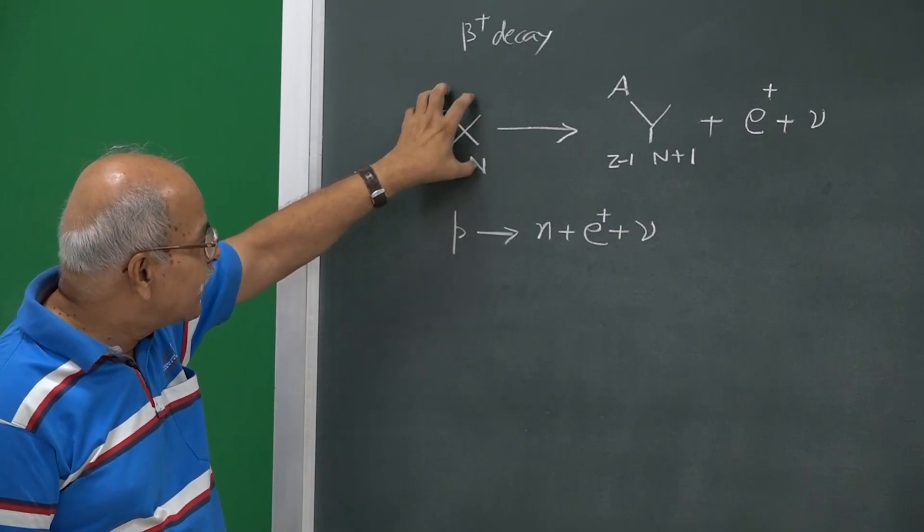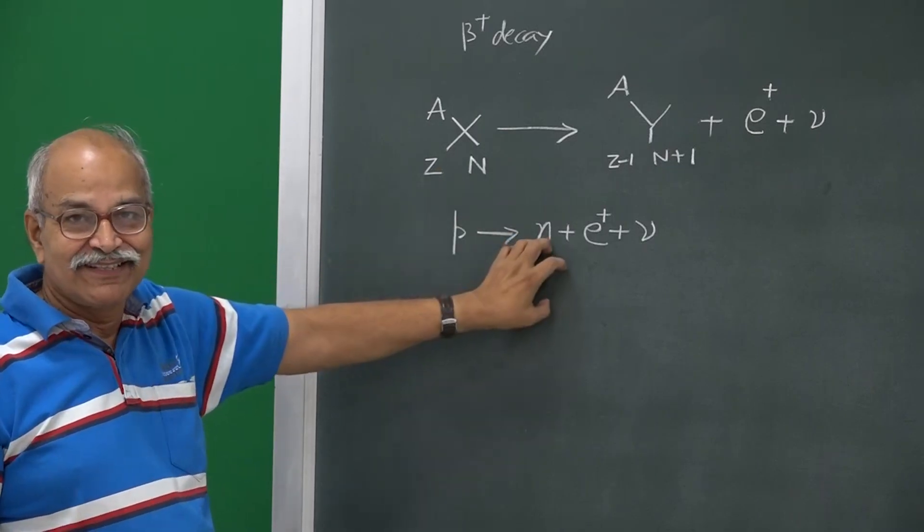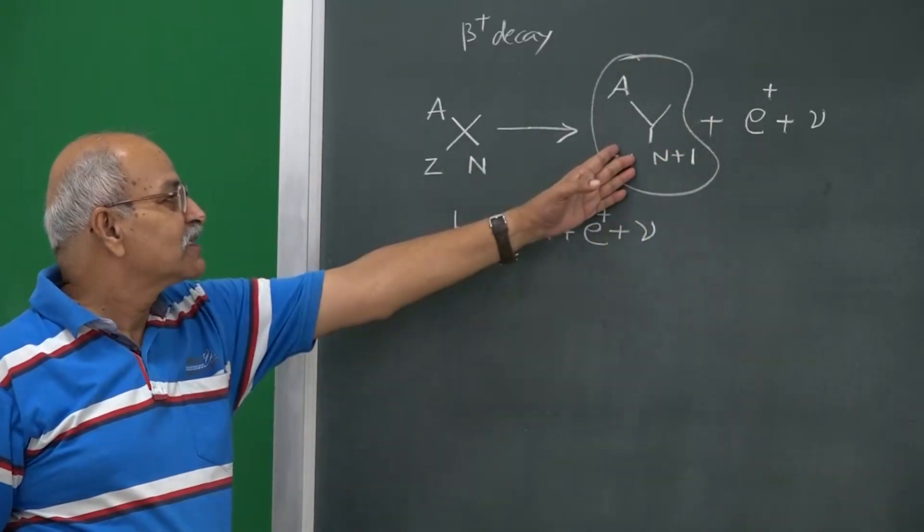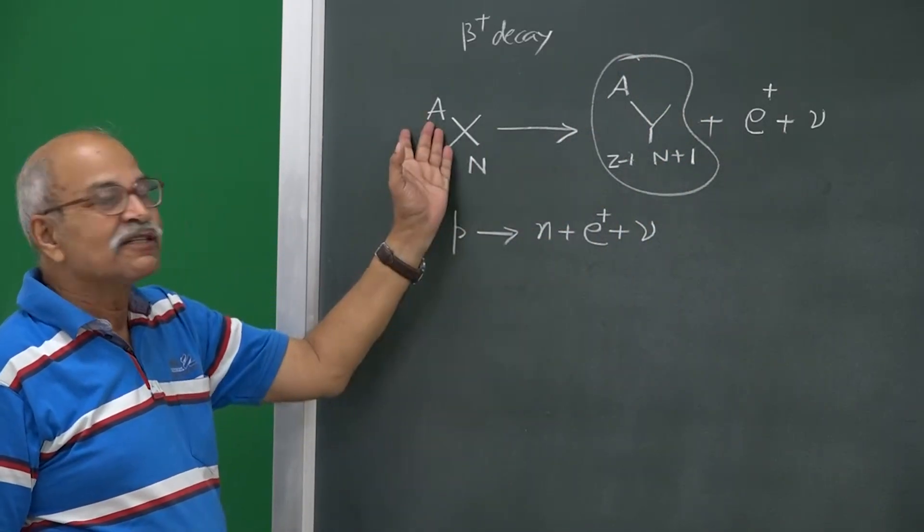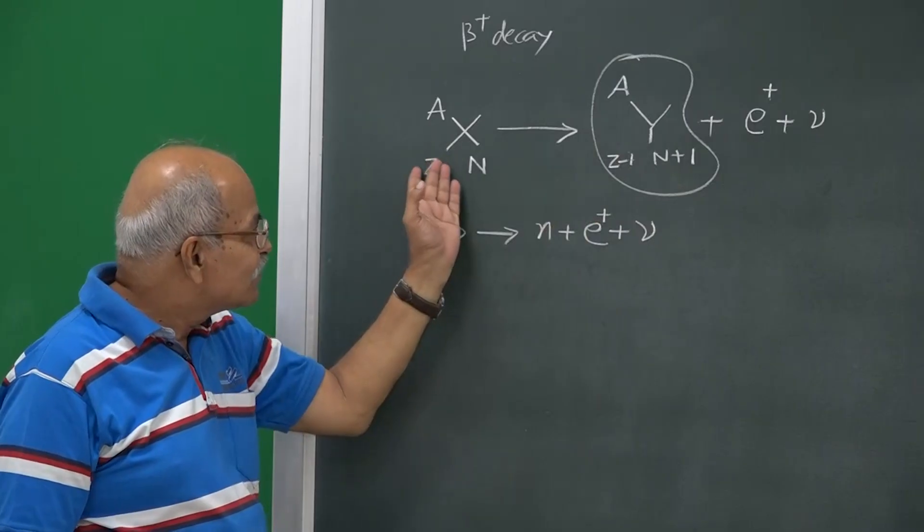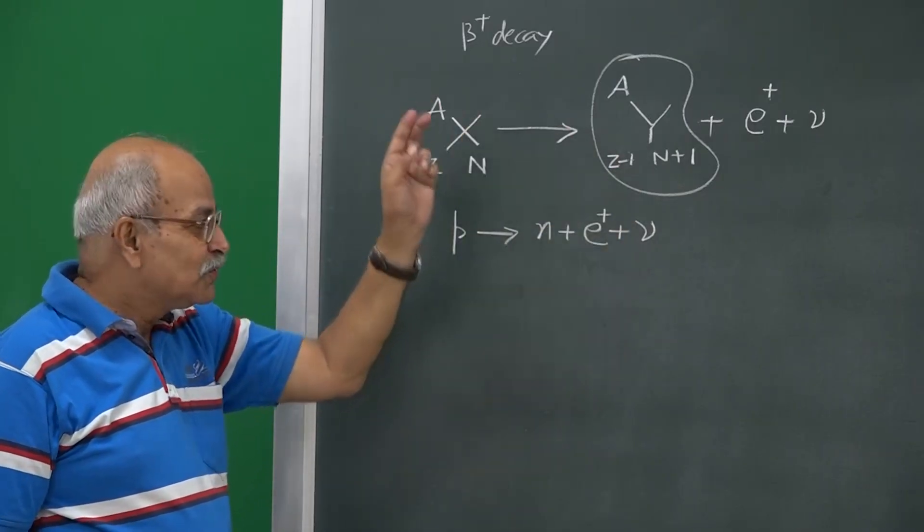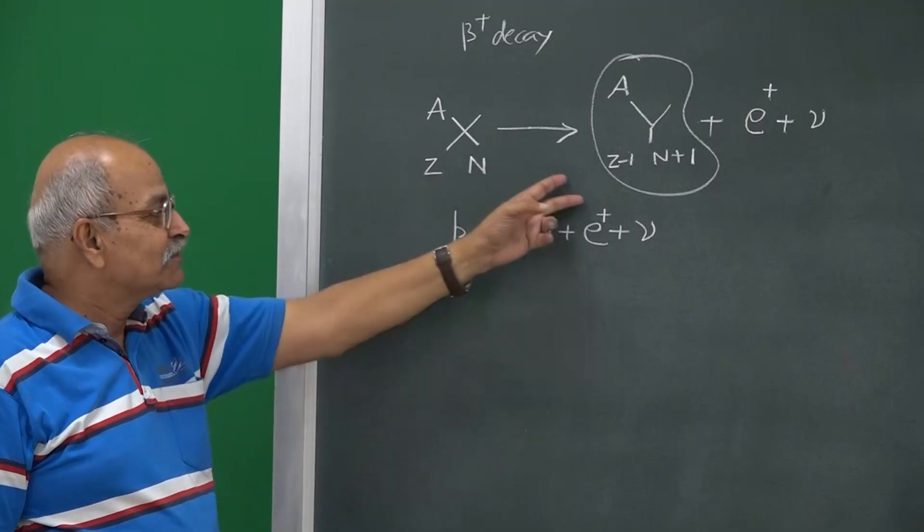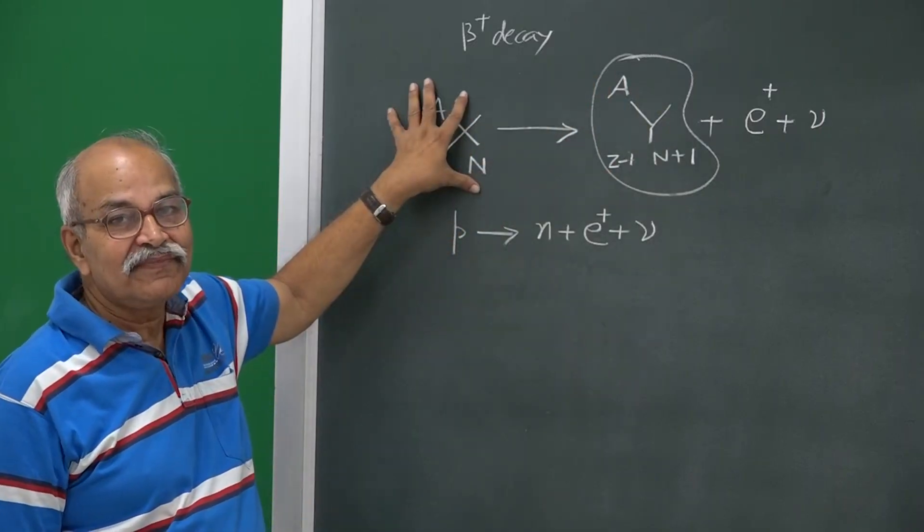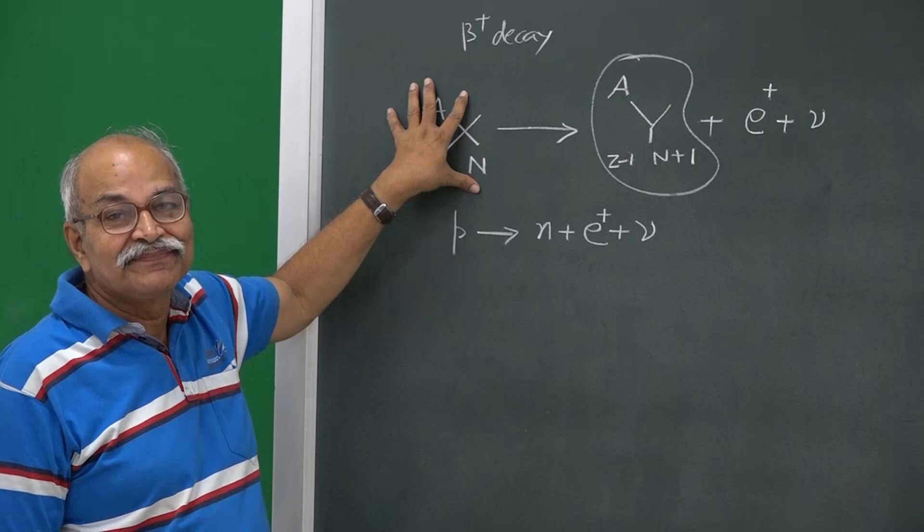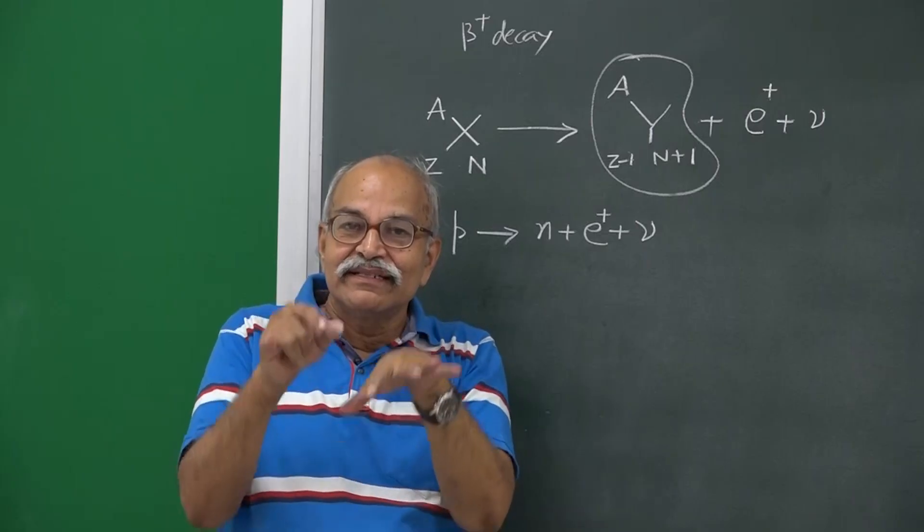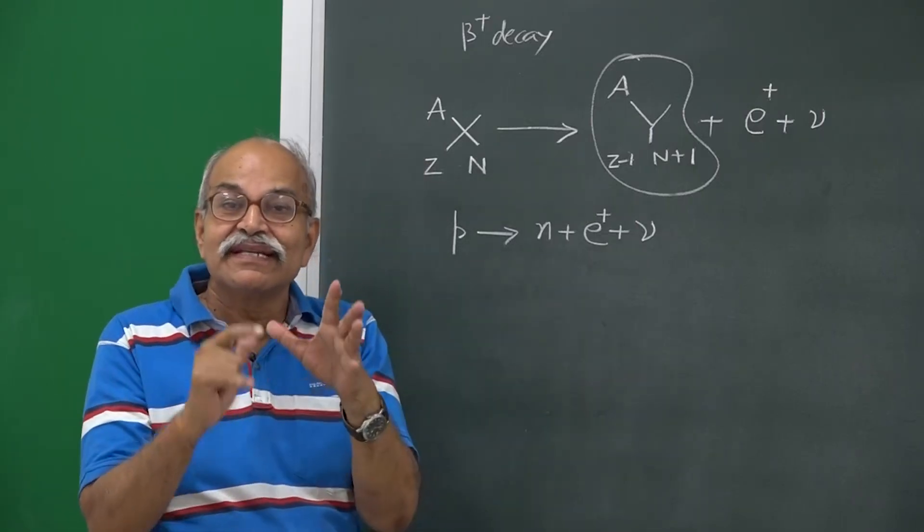All these nucleons help this proton to get converted, because finally, when you ask what is the mass of this, mass of this is smaller than mass of this. Although a neutron is converted into, proton is converted into neutron, although neutron has larger mass than the proton, but the mass of this whole nucleus is smaller than mass of this. And how is that done? That is done by changing the kind of bonding or changing the energy states of individual protons and neutrons which are sitting in the nucleus.